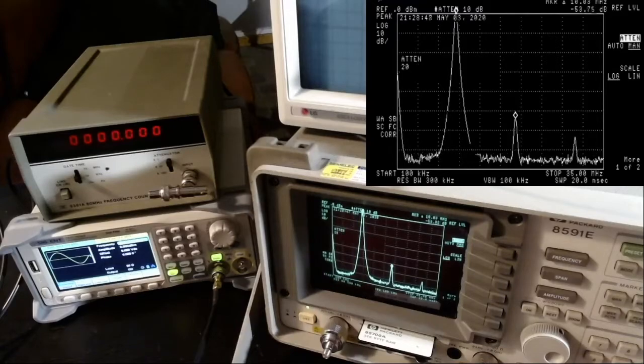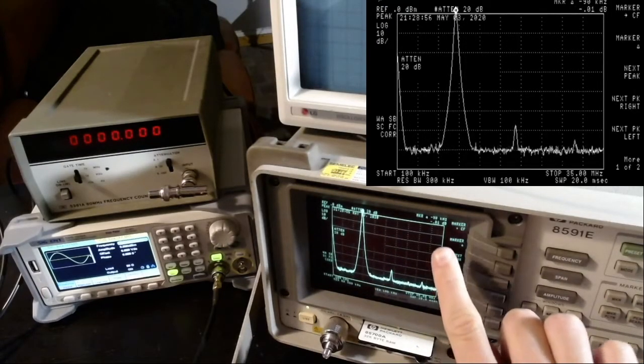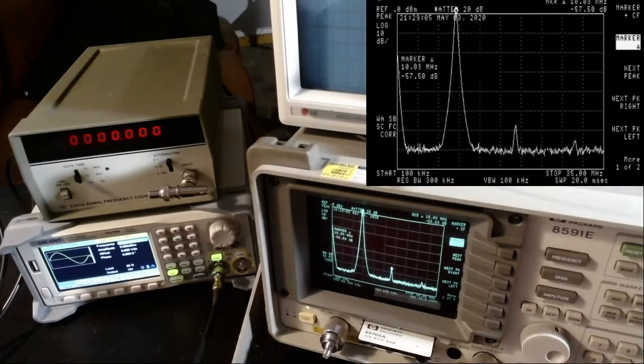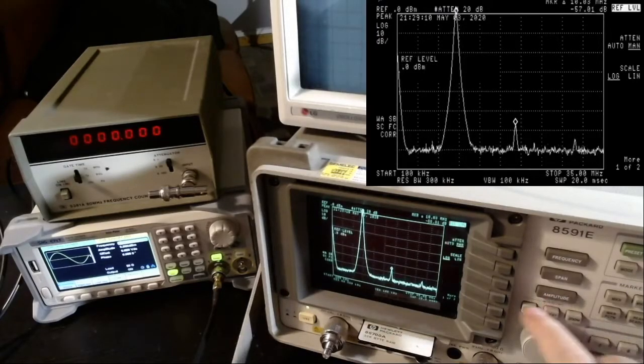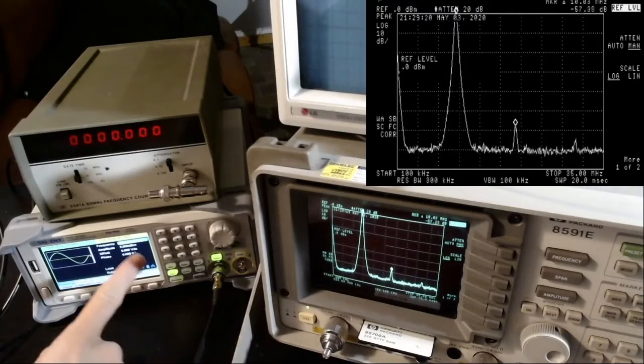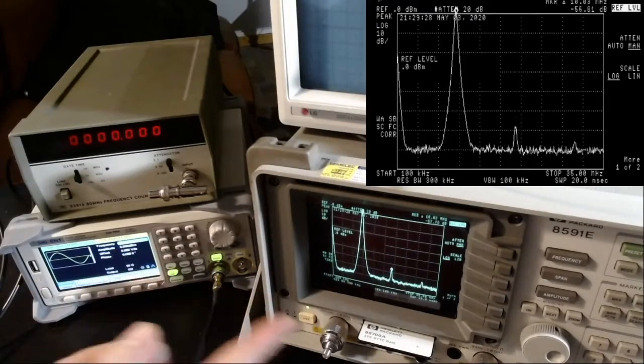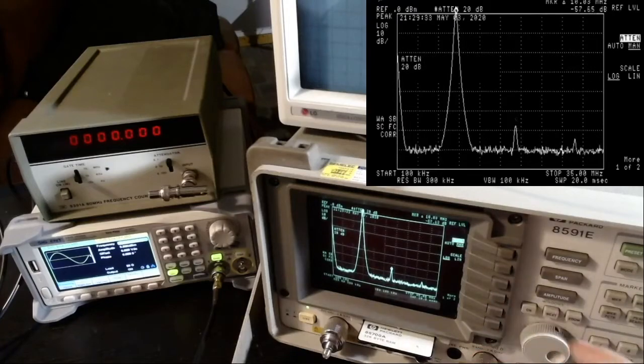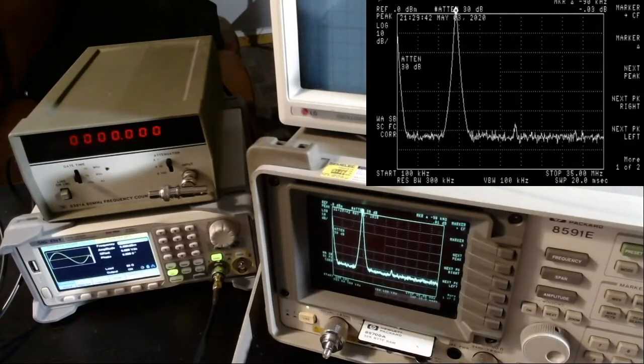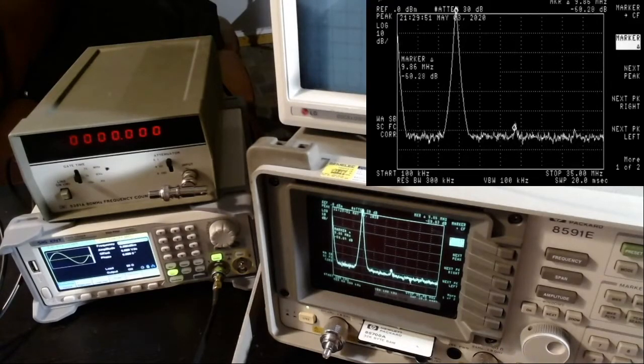If I increase this attenuation to 20 dB, our carrier is still at 0 dB, but the first harmonics now is minus 57, so it went down a little bit. Let's increase again the attenuation. The point of this attenuation is to get down the input of the spectrum analyzer to a sweet spot that the spectrum analyzer likes. At 30 dB attenuation, we are at minus 60, so this is within specifications.